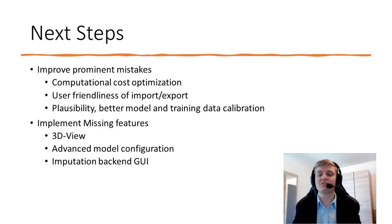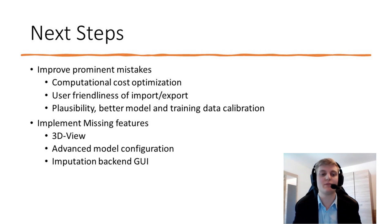This segues into our next steps. We need to improve prominent plausibility mistakes like this and optimize computational cost, both in the pre-processing of the visualization and the prediction of the imputation. Additionally, as requested by our stakeholders, user-friendliness of import and export needs to be improved. Finally, we need to implement missing features such as the 3D view, advanced model configuration, and the imputation backend GUI.